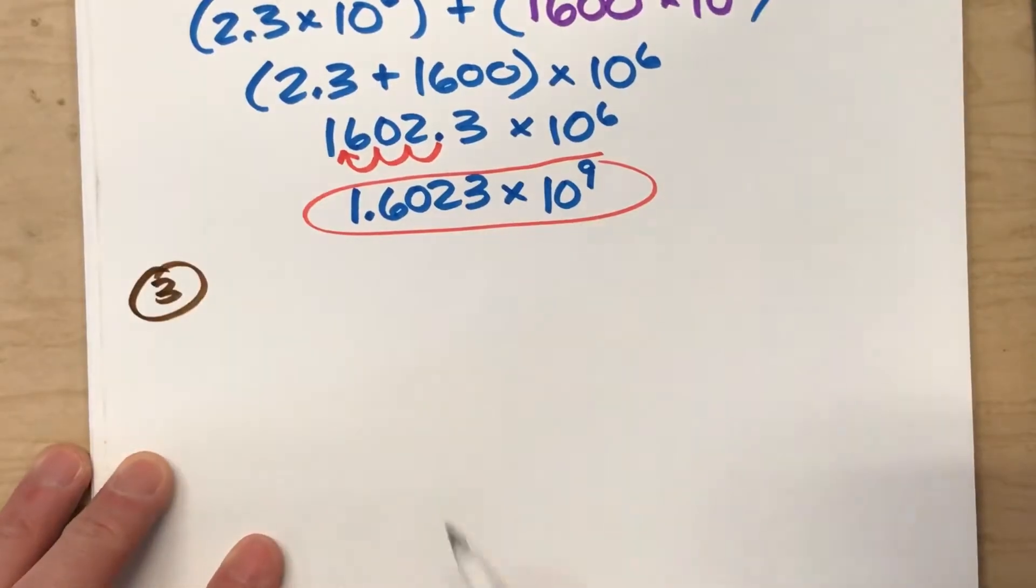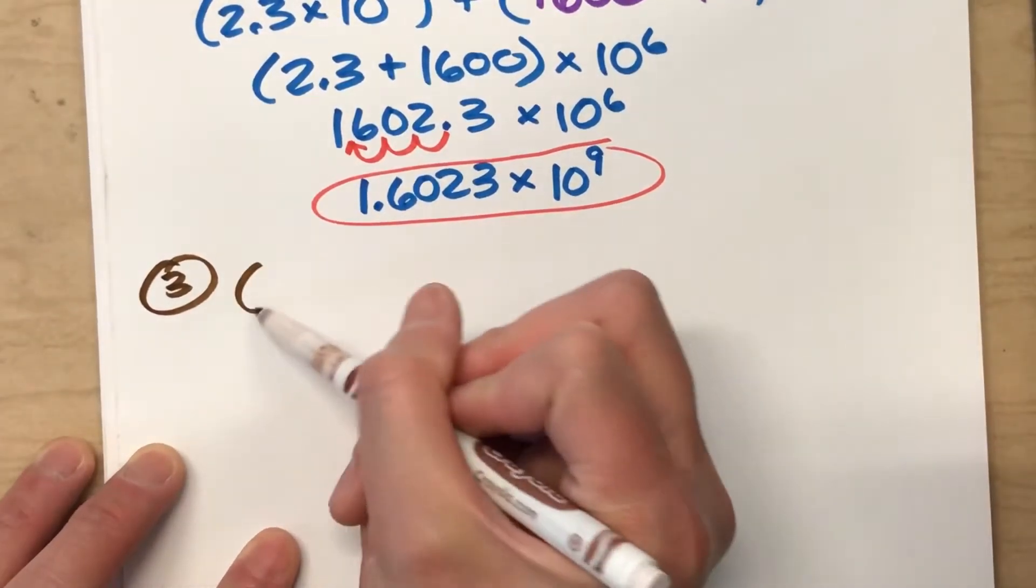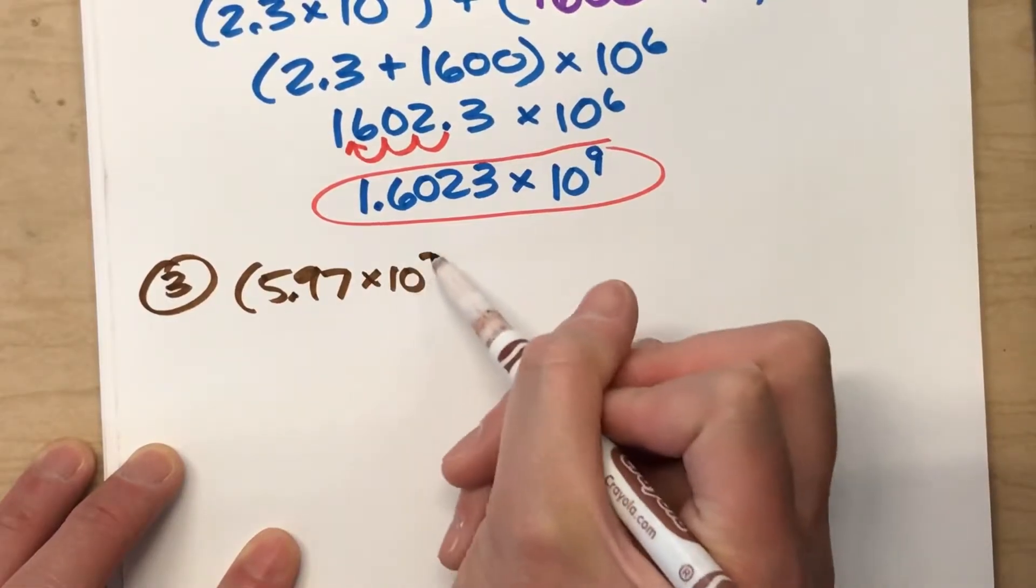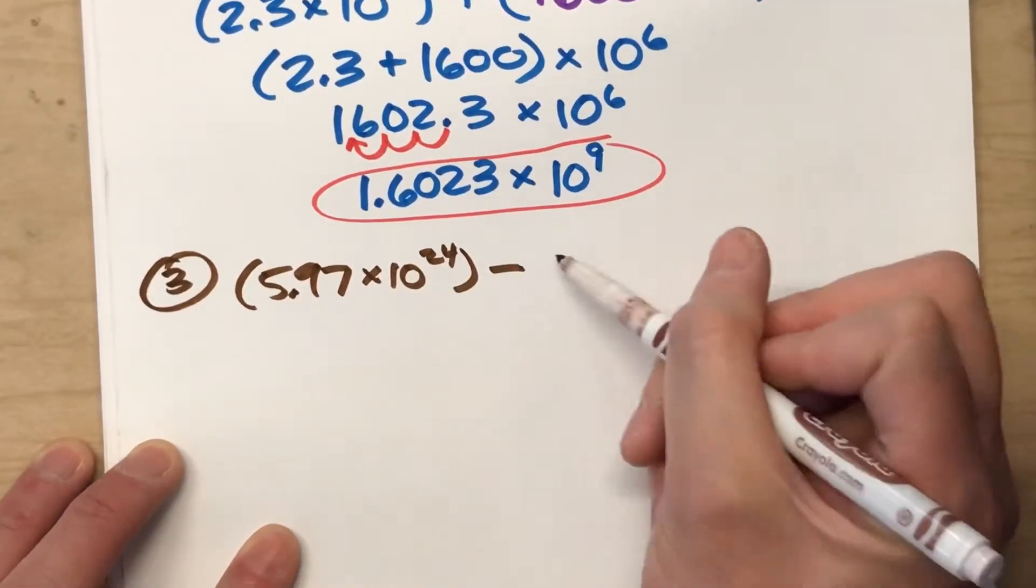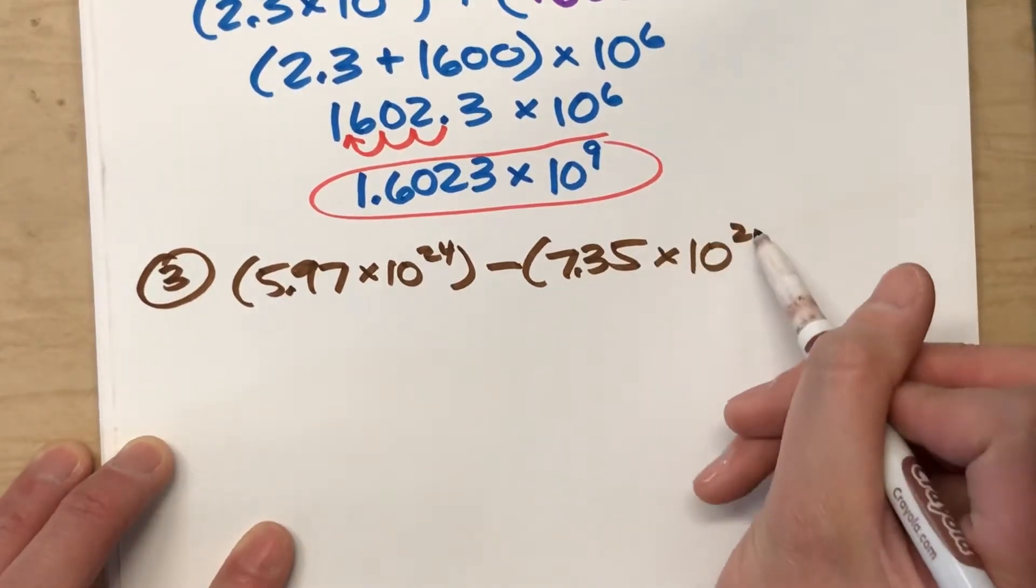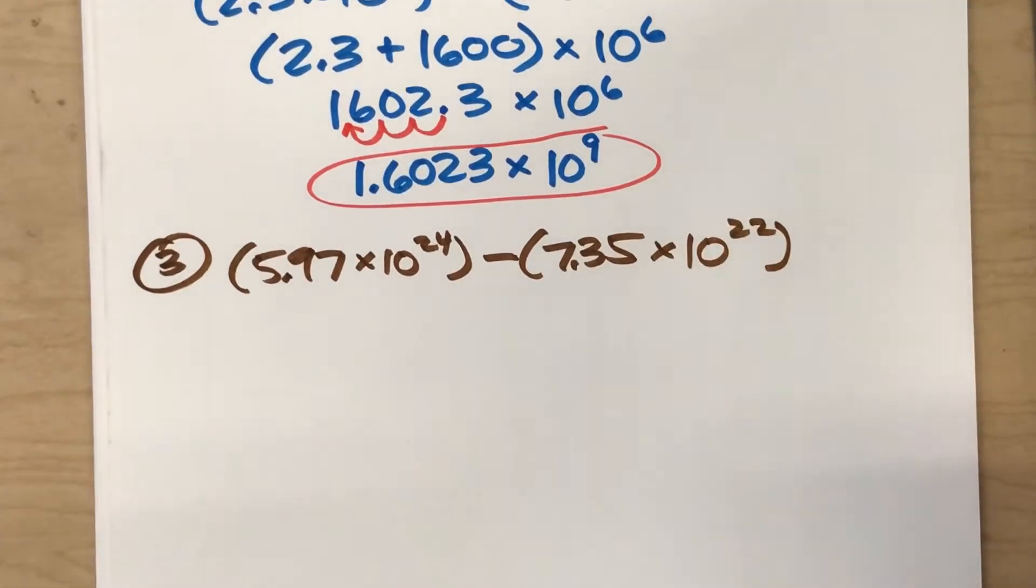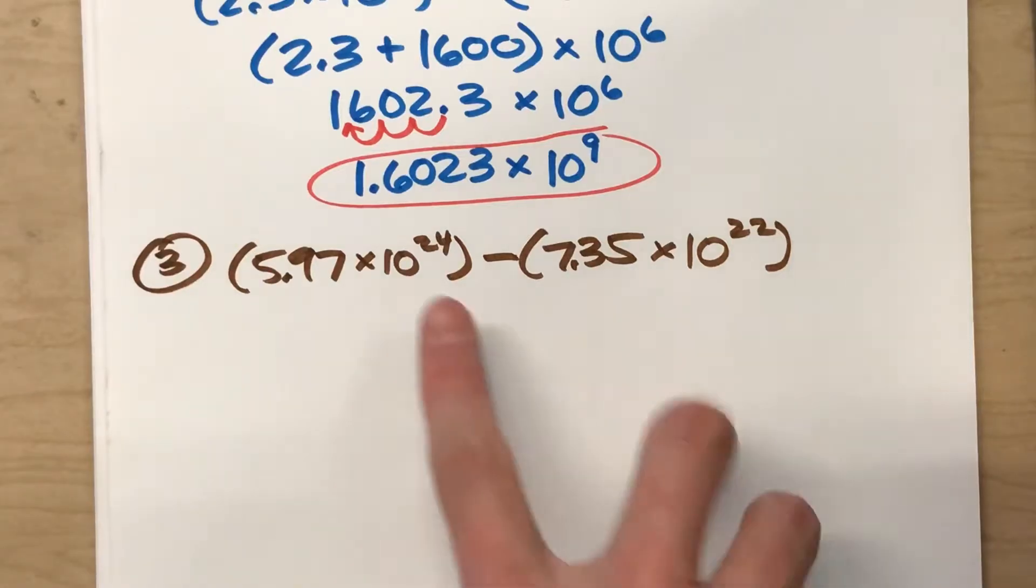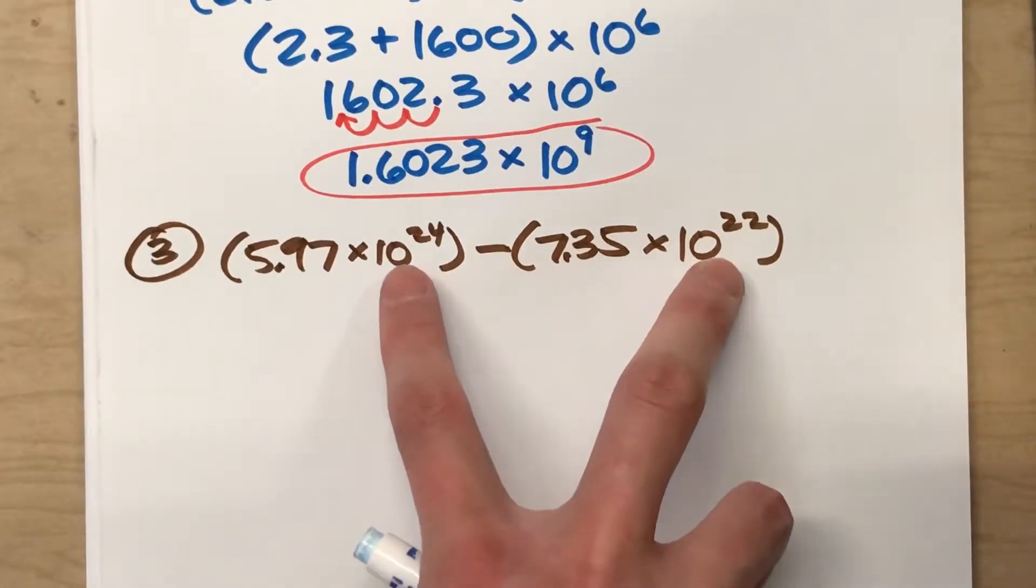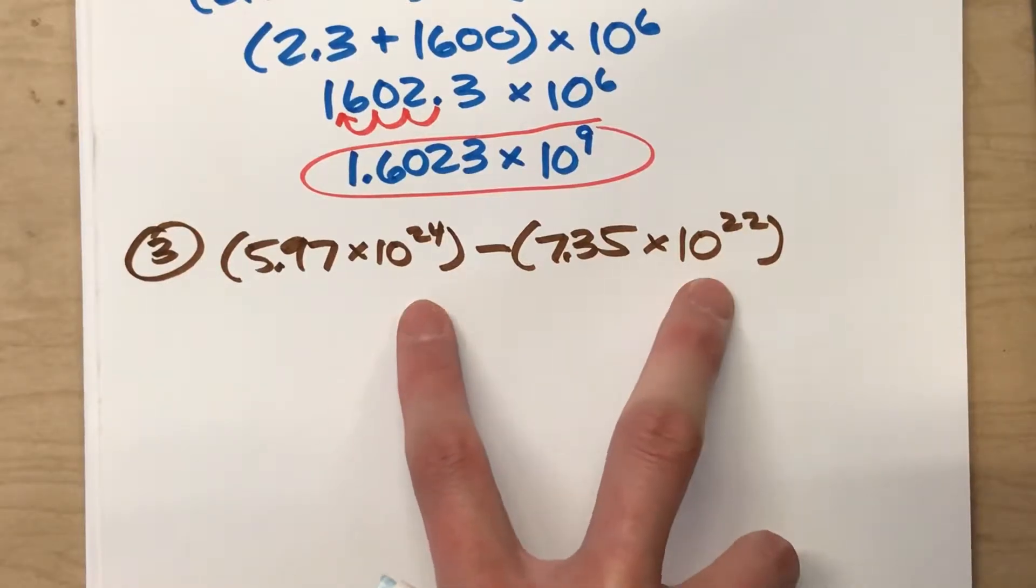This time we'll do subtraction. And the example we did in our notes today was 5.97 times 10 to the 24th power minus 7.35 times 10 to the 22nd power. Again, notice your exponents of your powers of 10, not the same.